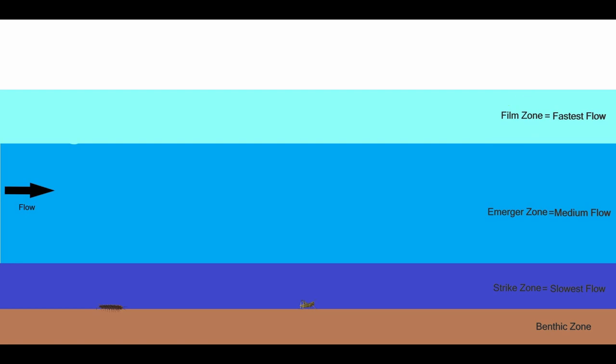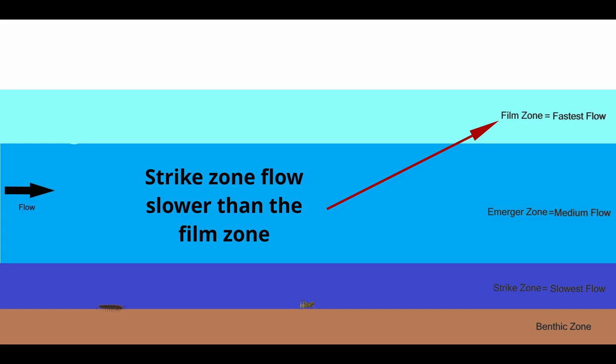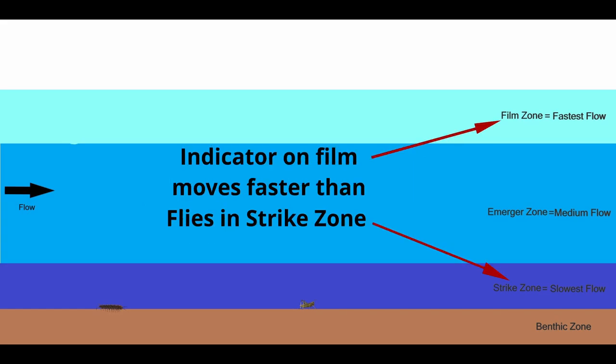The next layer is called the merger zone. This layer starts a couple of inches below the film zone and goes down to about nine inches above the bottom of the river. The water in the merger zone is moving slower than the film zone. The strike zone is the slowest moving water of these vertical layers because there's a lot of friction caused by water moving over the rocks, other surfaces, and aquatic vegetation. The water at the film is moving faster than the water in the strike zone — this is important to remember.